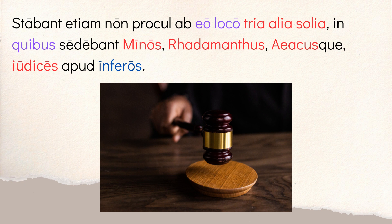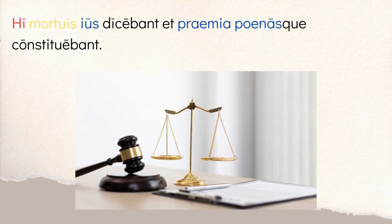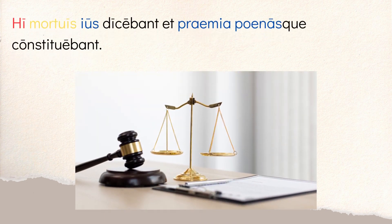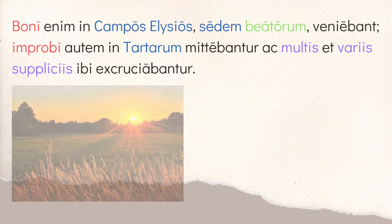The three judges are described further: 'hi mortuis iudicabant praemiaque poenasque constituebant.' So they — 'iudicabant' — pronounced judgment for the dead, 'mortuis.' And they decided — 'constituebant' — 'praemia,' rewards, and 'poenas,' punishments. Depending on what you did in life and how they measure your soul, you're either going to receive good things or bad things. Pluto is ultimately the final judge, but these three handle the judgment.